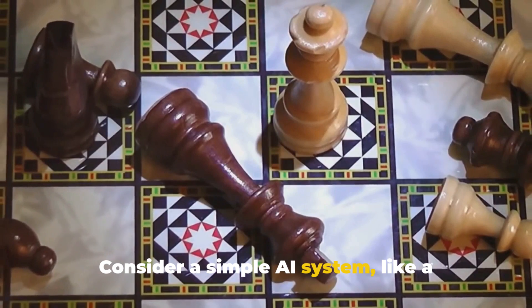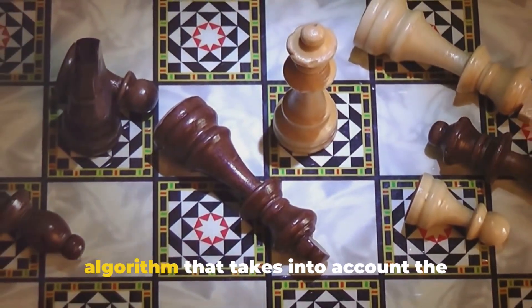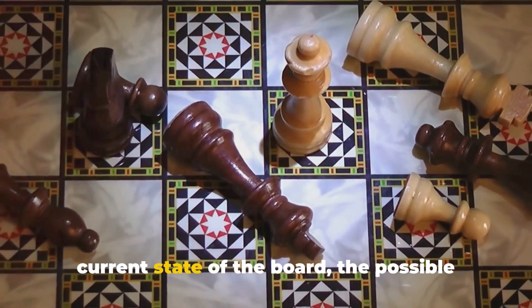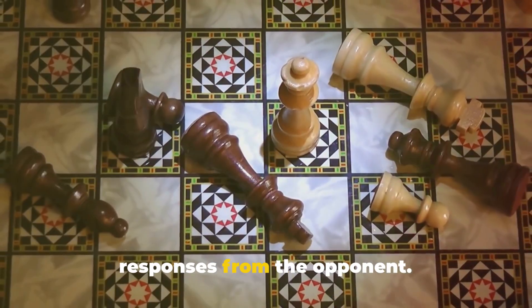Consider a simple AI system, like a chess-playing bot. To decide its next move, the bot uses an algorithm that takes into account the current state of the board, the possible moves it could make, and the likely responses from the opponent.